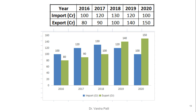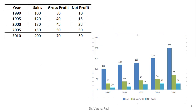Another example is different departments and their placement figures for a particular year, allowing immediate identification of which department has more or fewer placements. A further example covers the years 1995, 2000, 2005, and 2010, where sales, gross profit, and net profit are given. Since these are linked, three bars represent each year, enabling easy comparison and analysis of sales, gross profit, and net profit.